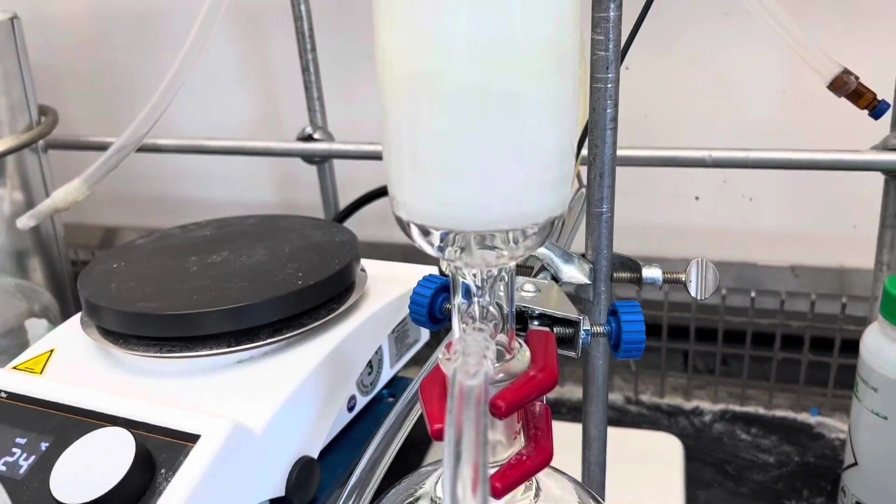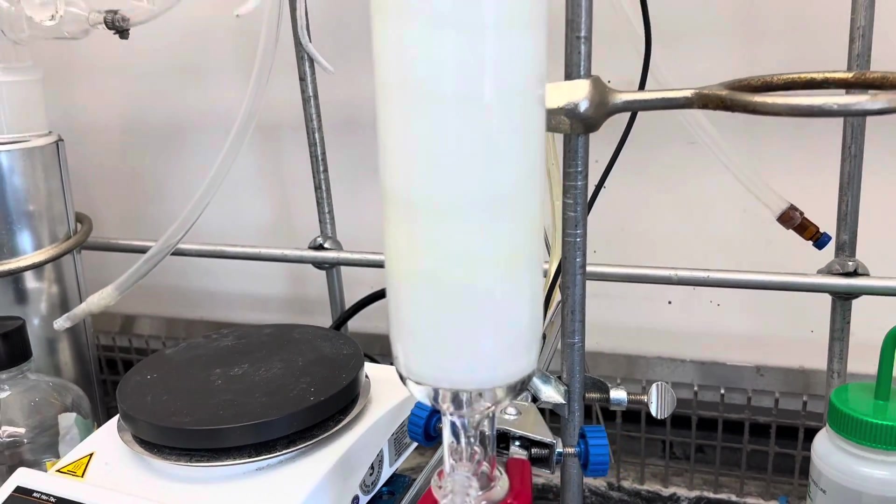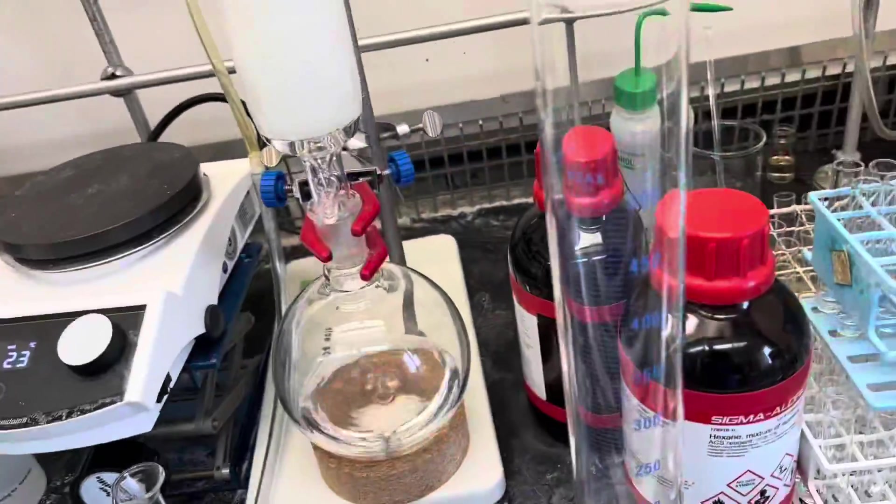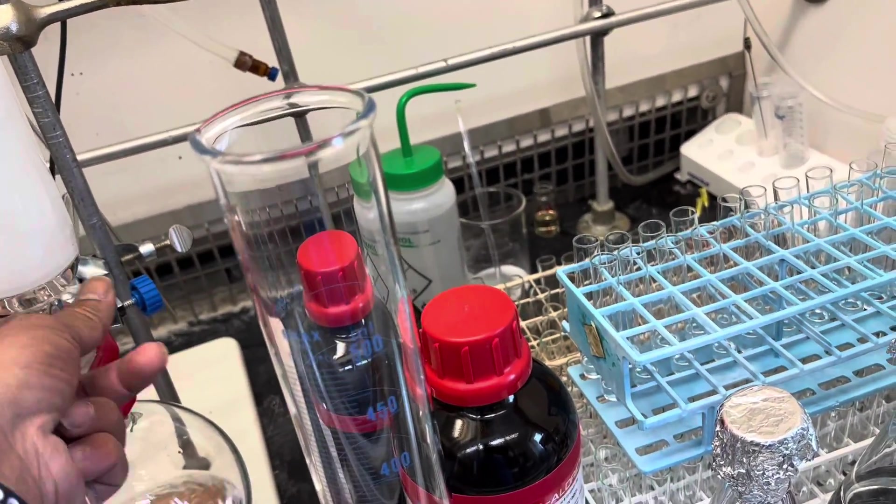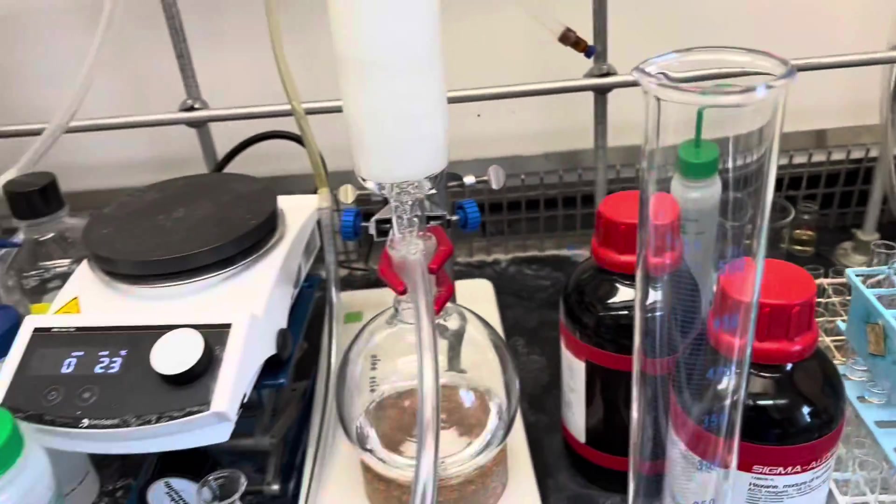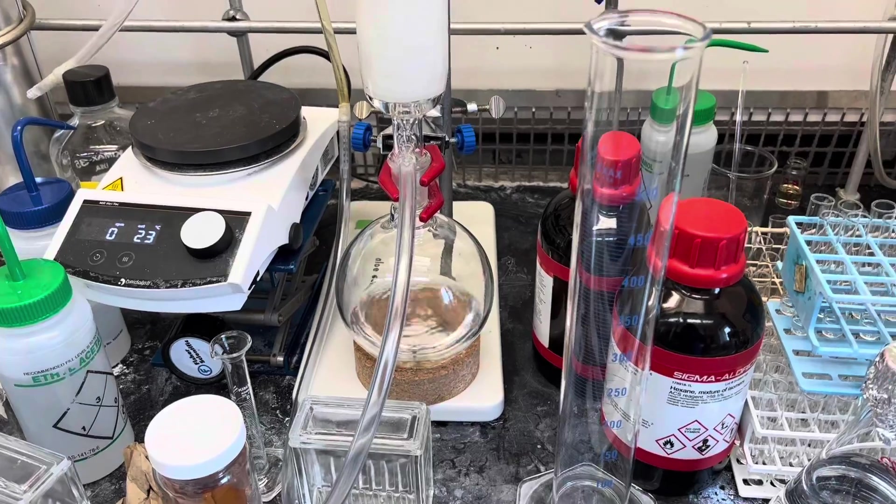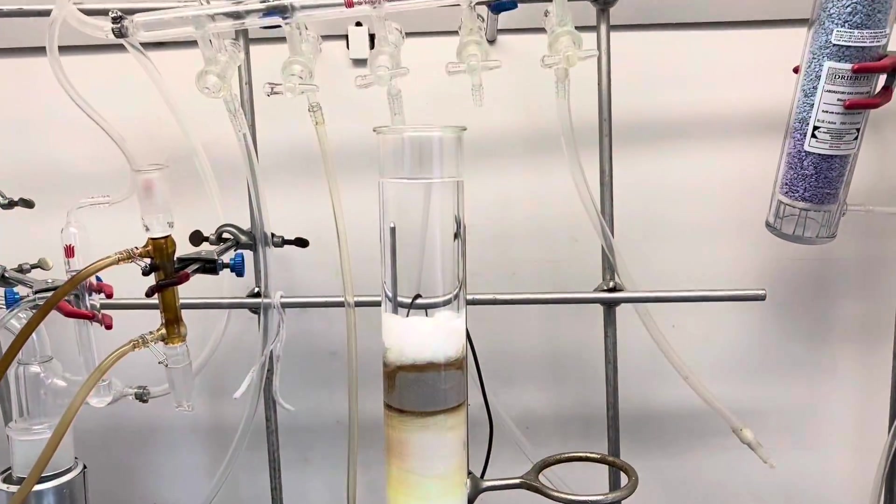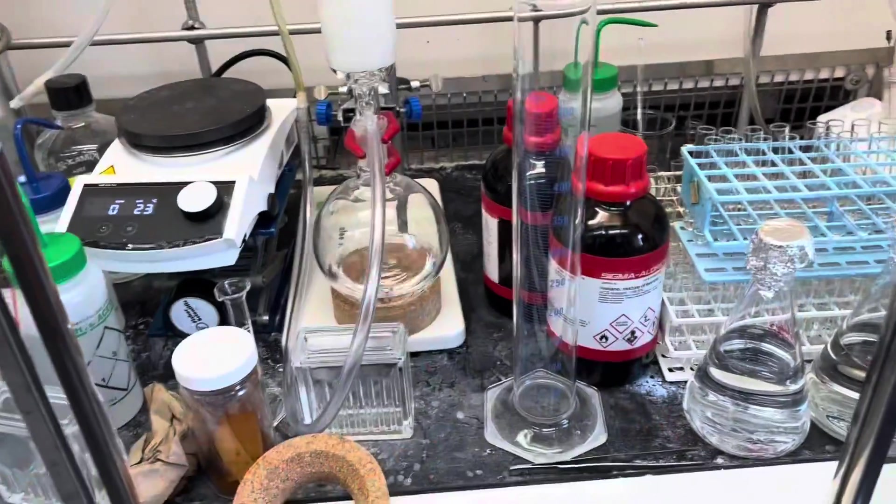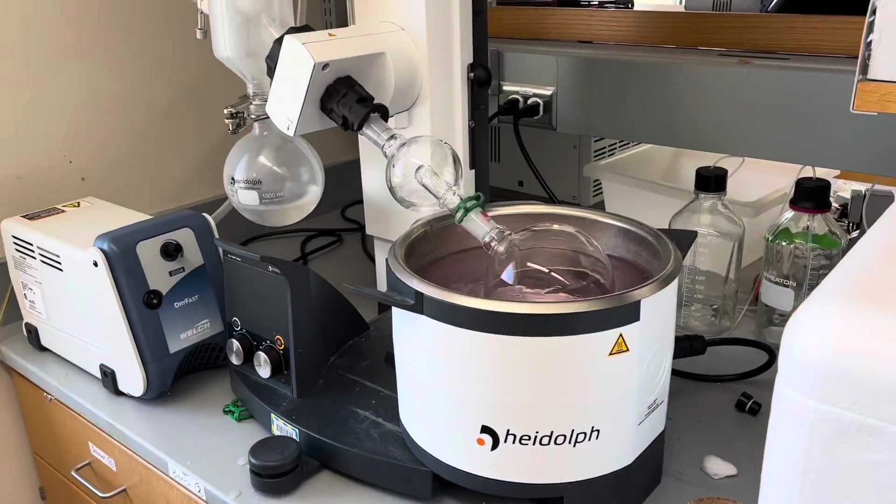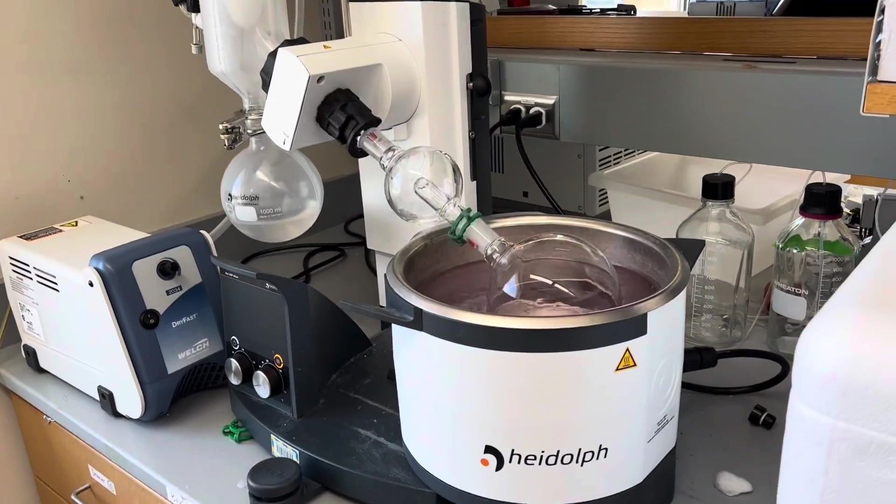I have changed another flask, here I'm collecting for the second fractions. While I am doing rotovap for the first fraction I have collected in my first flask, here I have added the solvent. Now you are seeing that I am already doing the rotovap for the first flask that I collected.